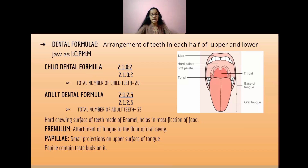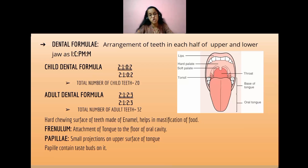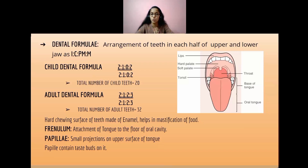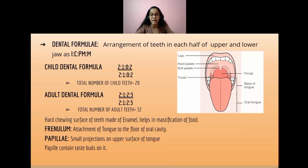In adults, the dental formula is 2:1:2:3 / 2:1:2:3 and the total number of adult teeth is 32. The hard outer surface of the teeth is made up of enamel, which helps in the mastication of food — meaning the mixing and chewing of food.